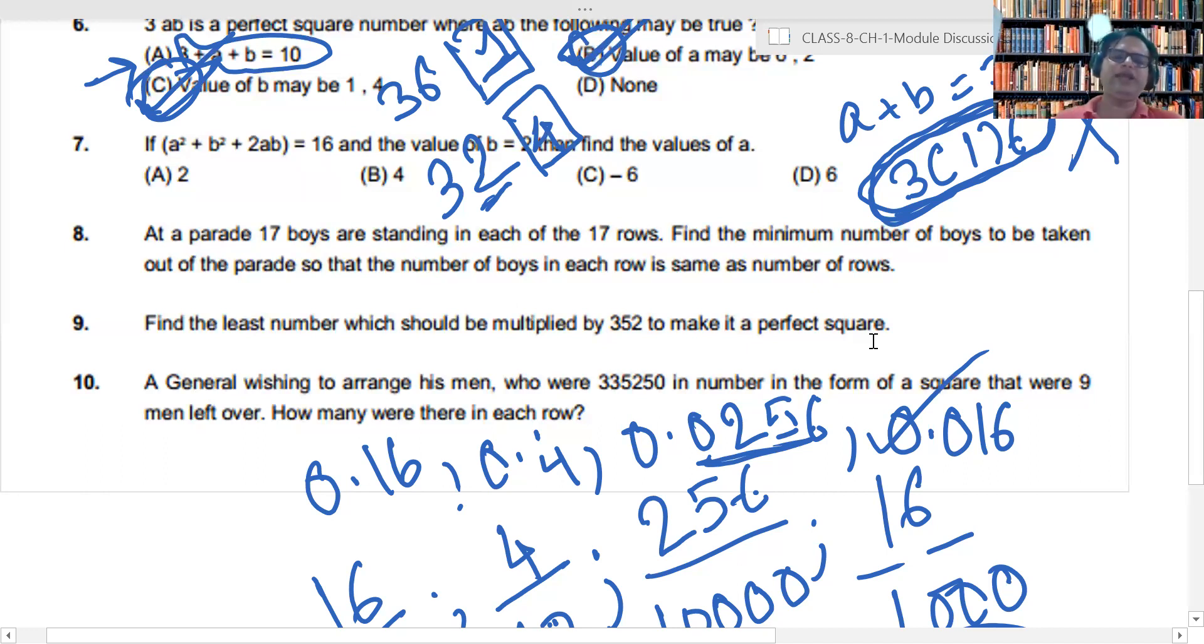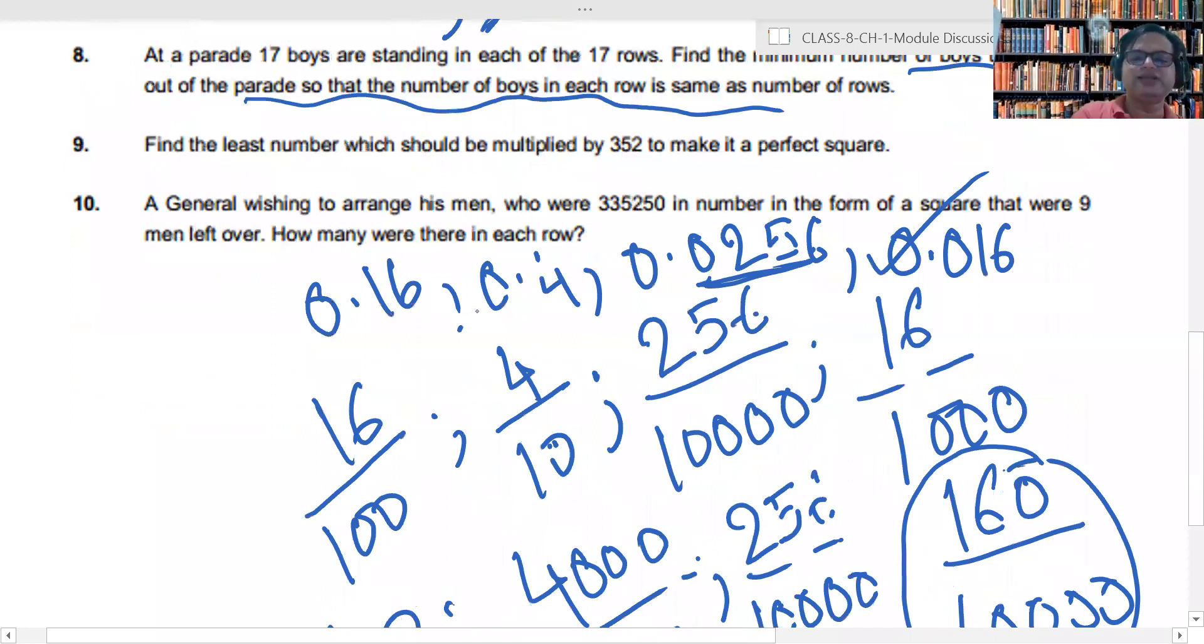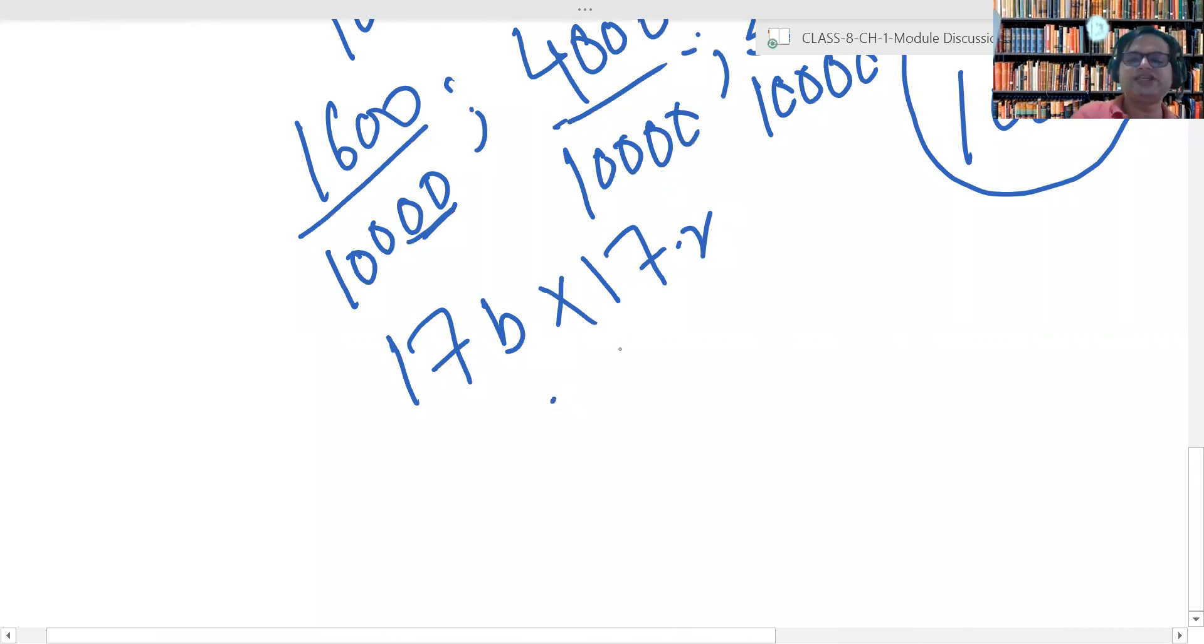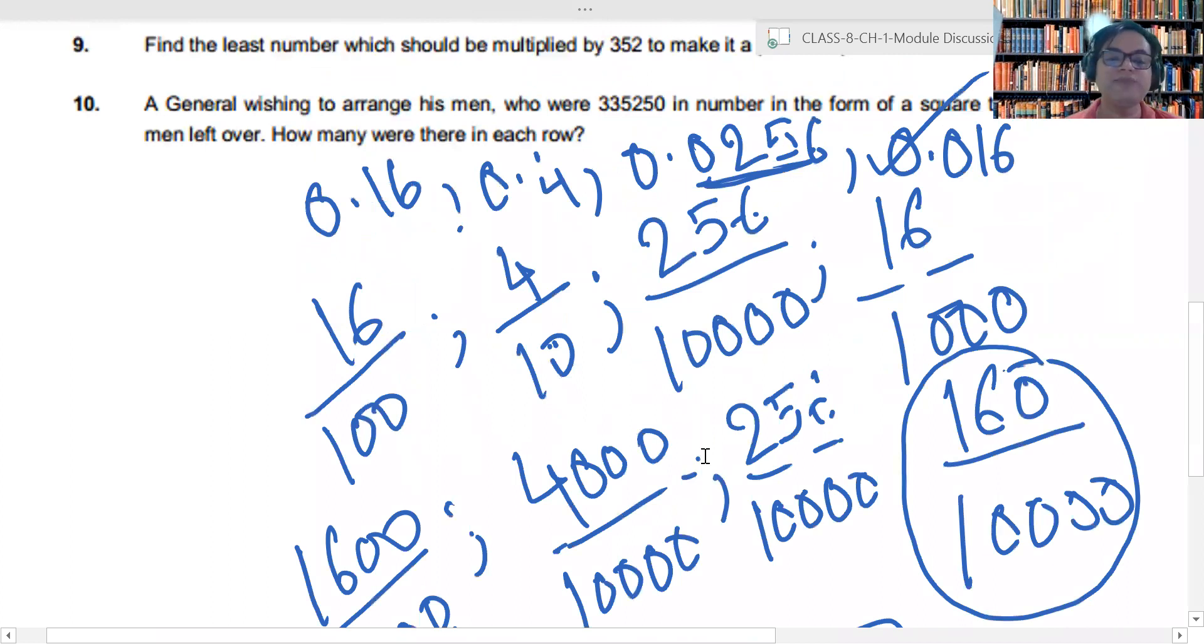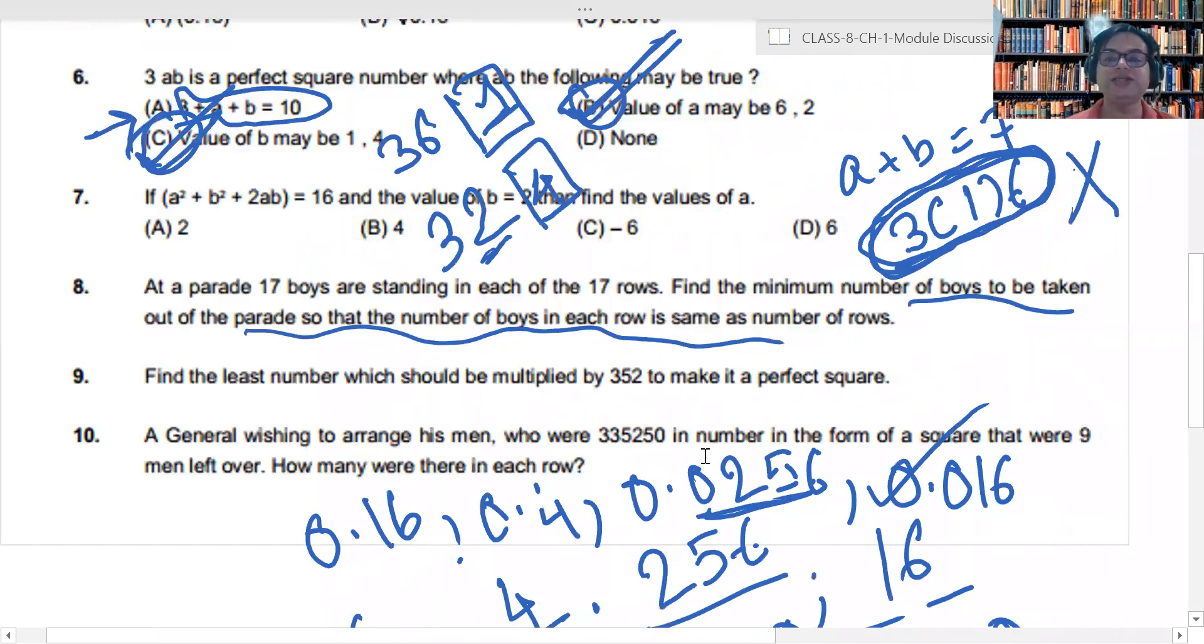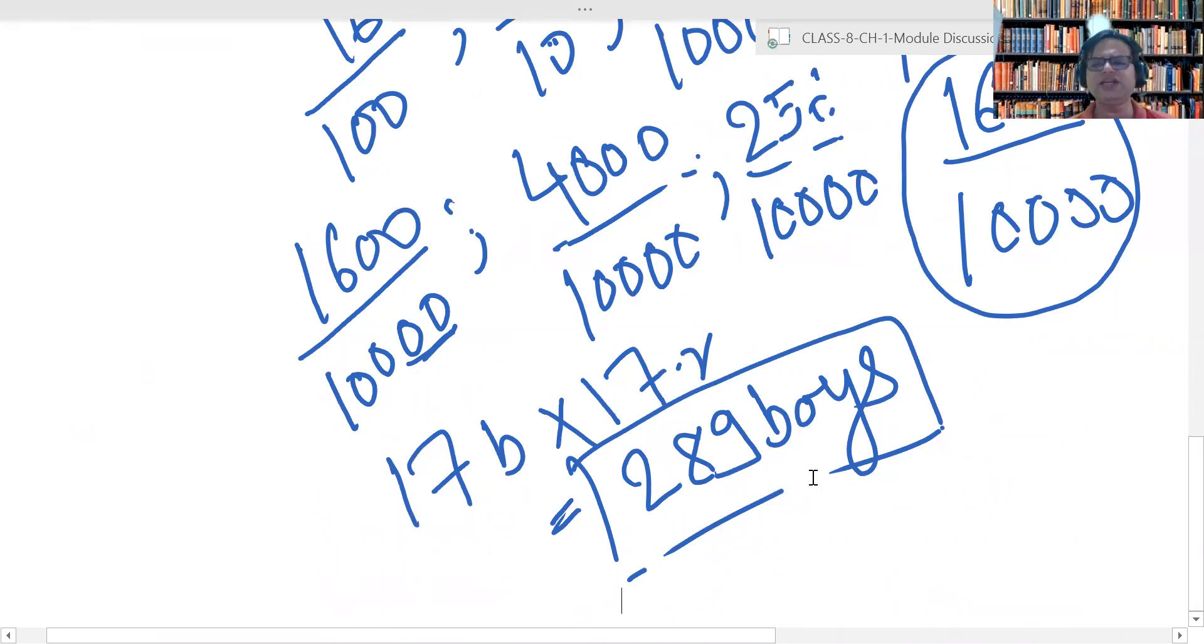The question is saying a parade of 17 boys are standing in each of the 17 rows. So, in one row, how many boys are standing? 17. It is a square of 17 into 17. So, if we do it by 16 into 16, we can do like that. But why we will do 16 square? See, 17 boys are standing in 17 rows. So, basically, I am having 289 boys. Right? Now, this is in itself a perfect square. Now, they are saying, find the minimum number of boys that are to be taken. Since this is already a perfect square, the minimum number of boys that are to be taken will be zero.